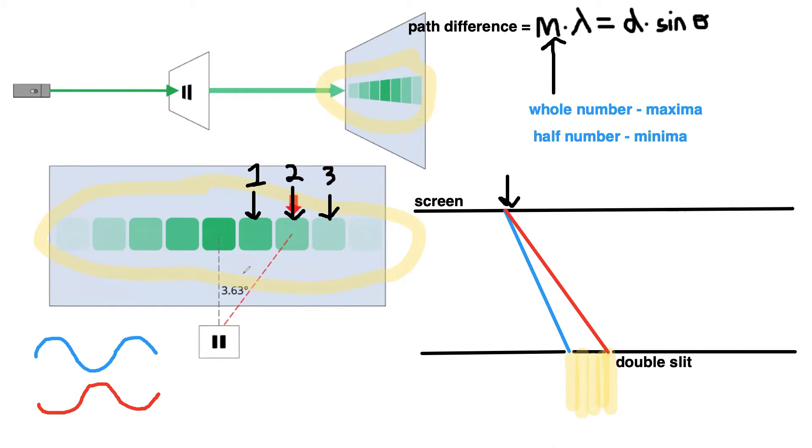If we wanted to find our minima, we can also do that using half numbers. So to find this minima here, our M would be 0.5. To find this minima here, our M would be 1.5. Or to find this minima here, our M would be 2.5.